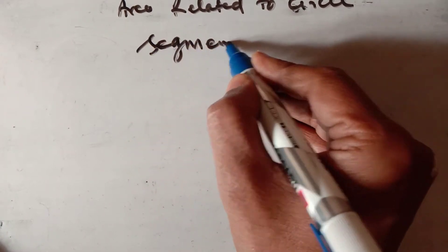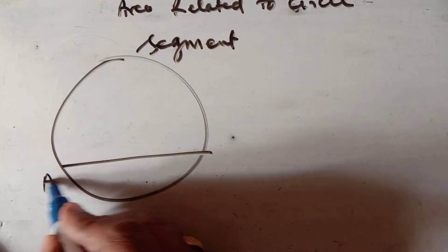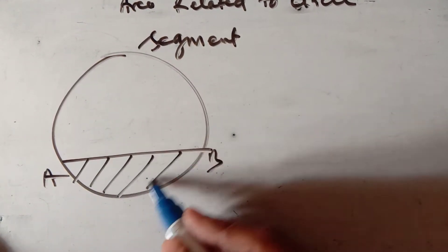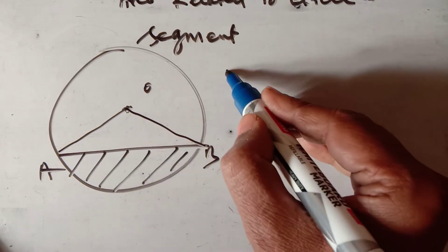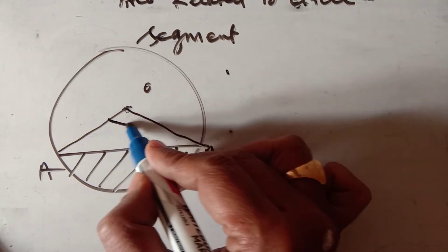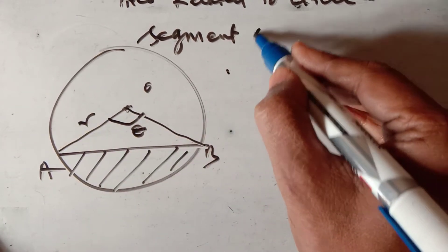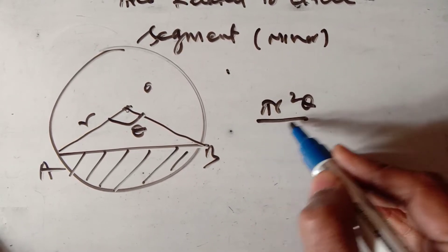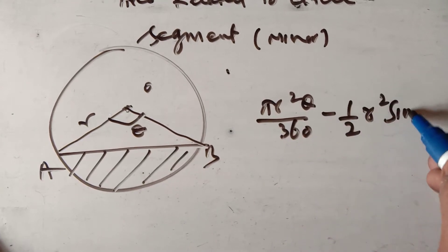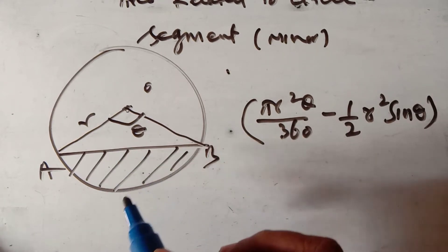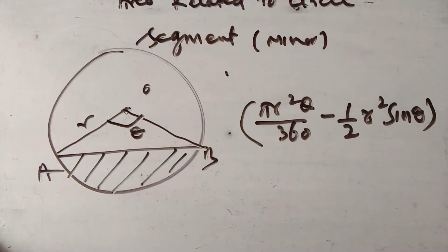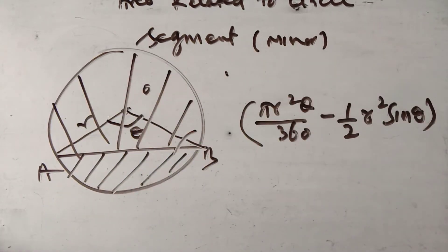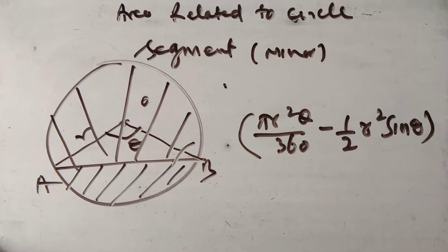A segment is the area bounded by a chord and the circle. The smaller part is the minor segment and the remaining is the major segment. The area of the minor segment equals the area of the sector minus the area of the triangle: πr²θ/360 − ½r²sinθ. To find the major segment area, subtract the minor segment area from the area of the circle.